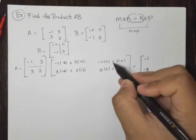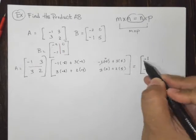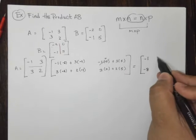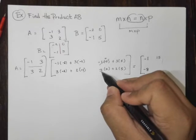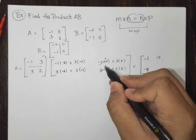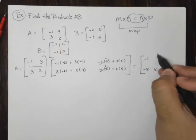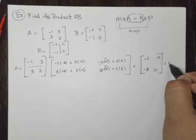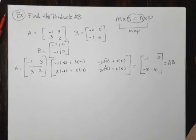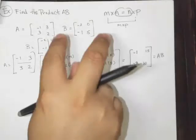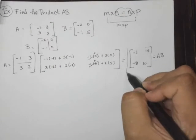This negative 1 times 0 is just 0. And so we're left with 3 times 5, which is 15. 3 times 0 here is again 0. And we're left with 2 times 5, which is 10. So if we look at it here, this is our product, AB, for what we were looking for. So this right here is our product.